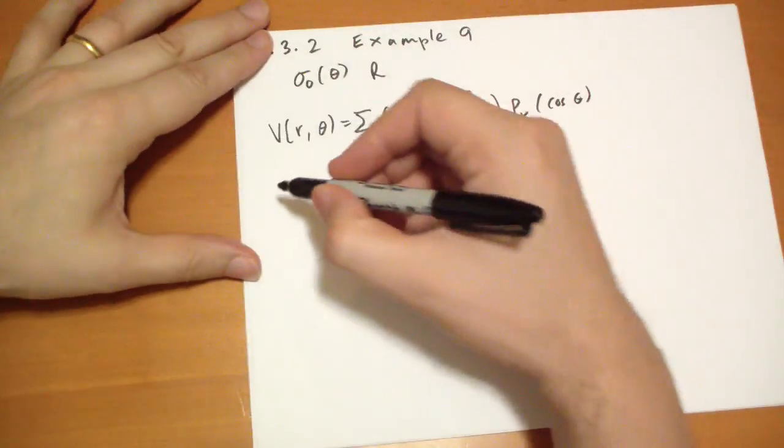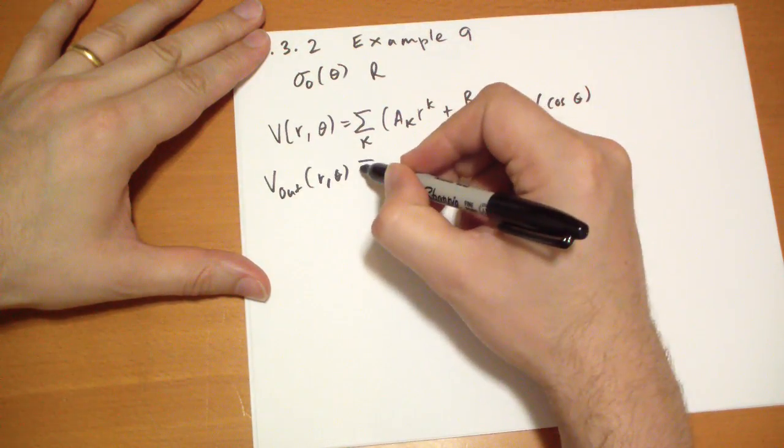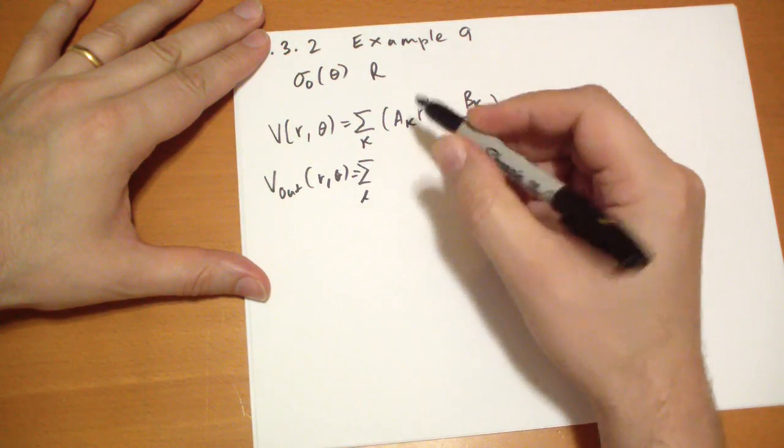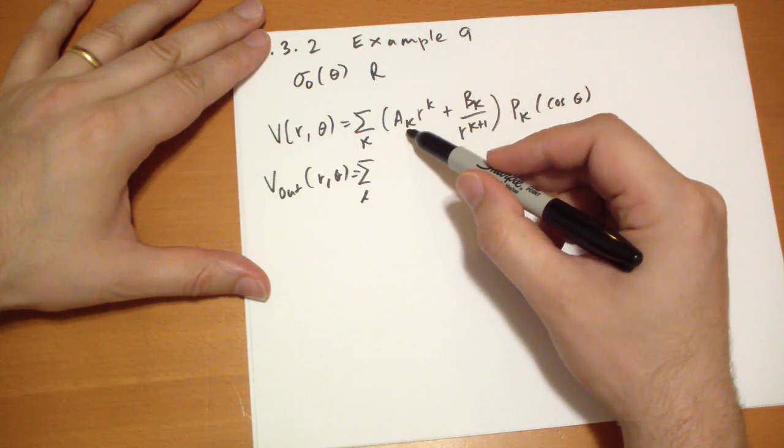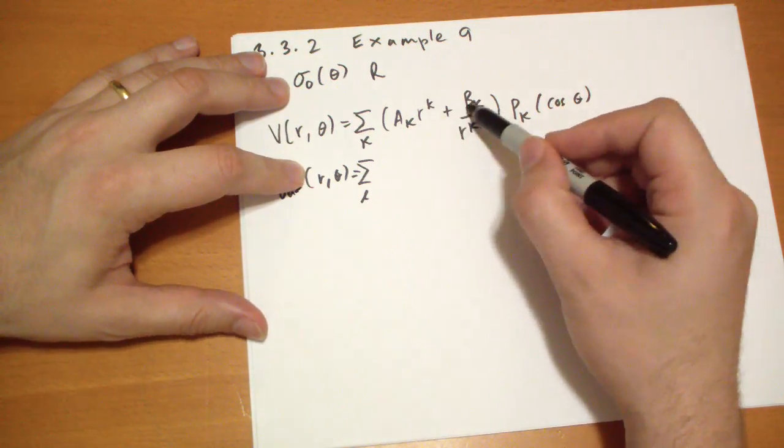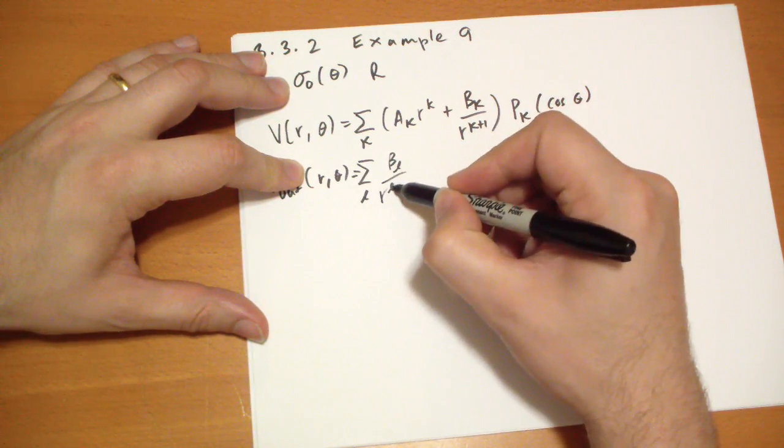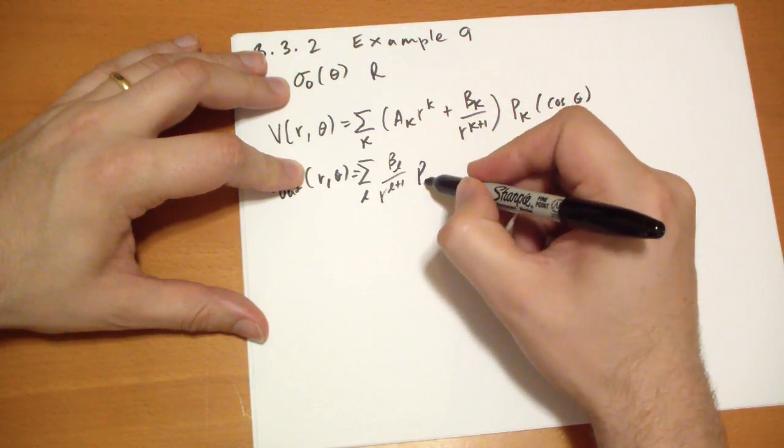In this case, the potential outside, as R tends to infinity, this term will blow up, so we have to keep the B_L term and of course the P_L term.